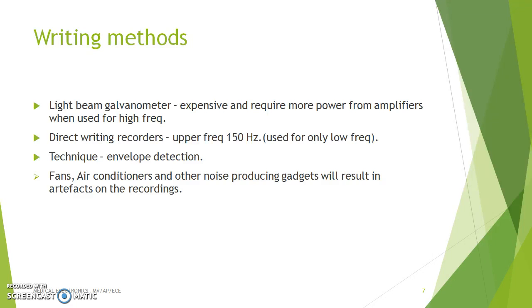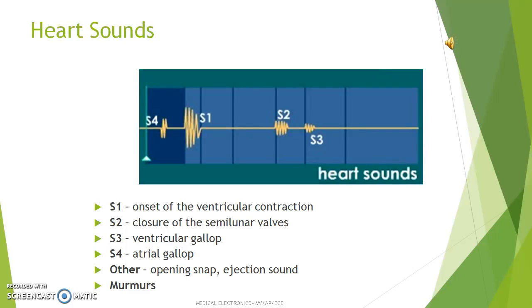This is the waveform of the heart sound in PCG recording. The waveform contains S1, S2, S3, and S4. S1 represents the onset of ventricular contraction, and S2 represents the closure of the semilunar valves. S3 is about ventricular gallop and S4 explains arterial gallop. Other waveform features include the opening snap, ejection sound, and some murmurs of the heart sounds.